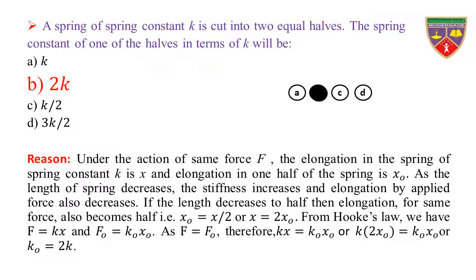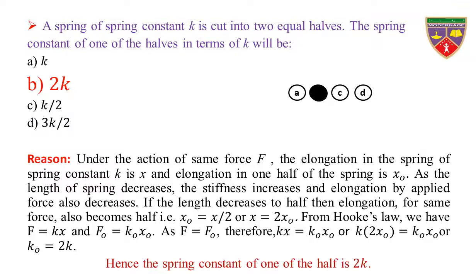Reason: under the action of same force F, the elongation in the spring of spring constant K is X and elongation in one of the halves is X0. As the length of spring decreases, the stiffness increases and elongation by applied force also decreases. If the length decreases to half, then elongation for same force also becomes half. That is, X0 = X/2 or X = 2X0. From Hooke's Law, F = KX and F0 = K0·X0. As F = F0, therefore KX = K0·X0, so K·2X0 = K0·X0, giving K0 = 2K. Hence, the spring constant of one of the halves is 2K.